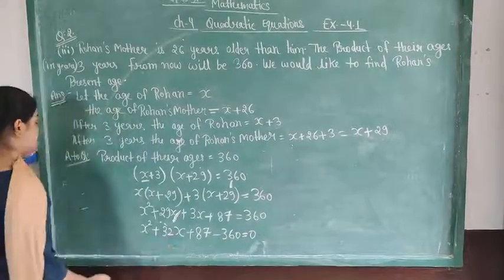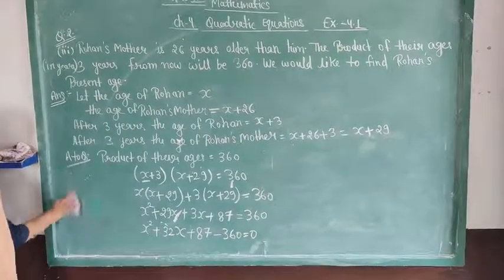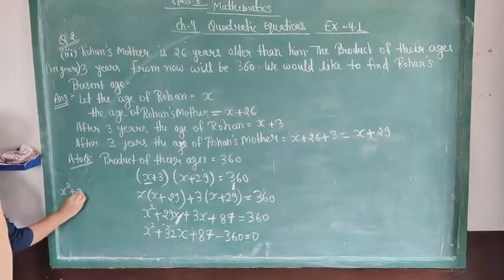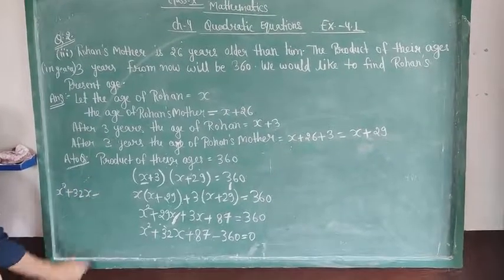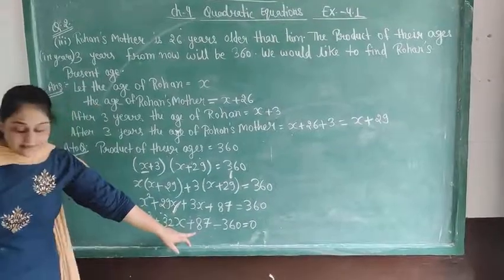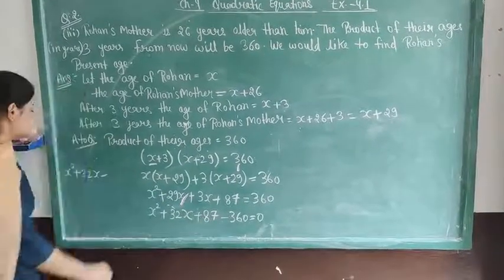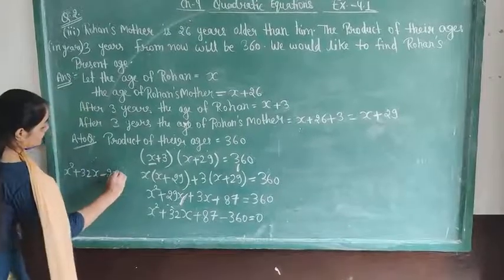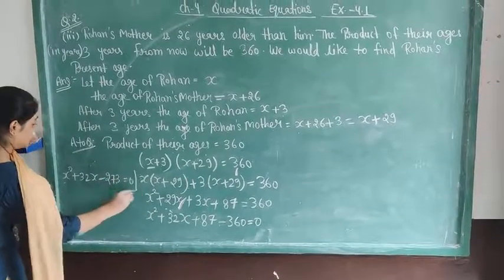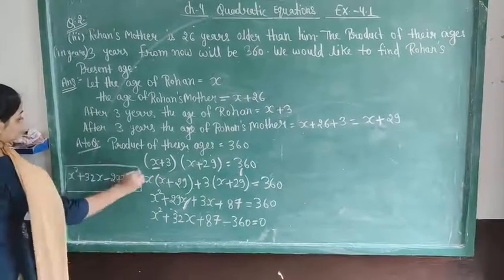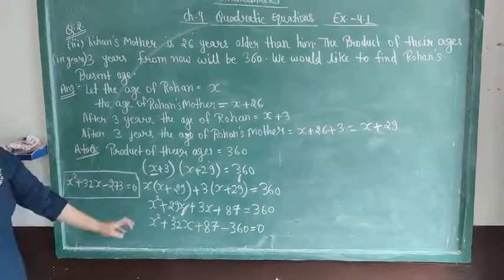We can solve this constant term. x squared plus 32x minus 273 is equal to zero. This is the quadratic equation.